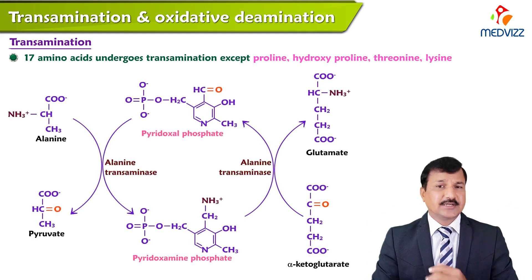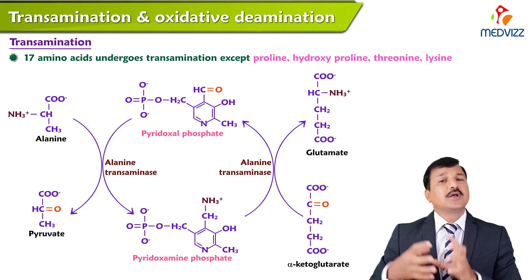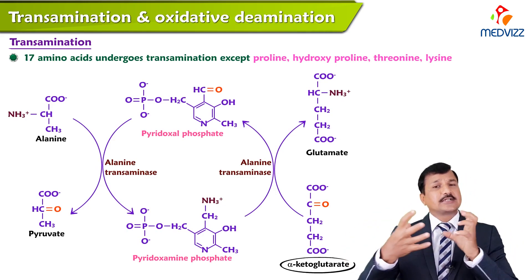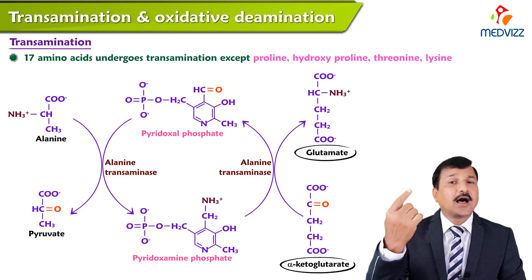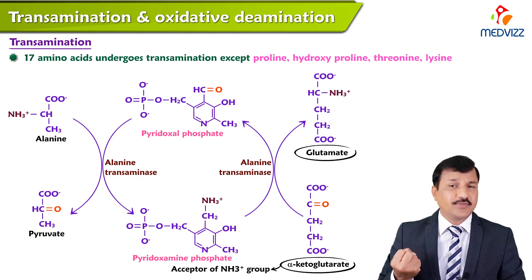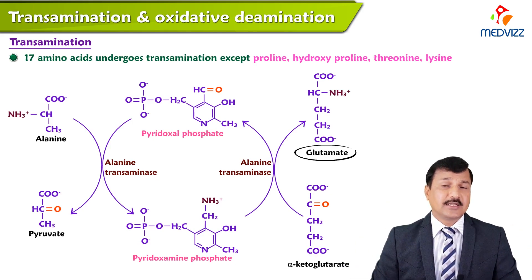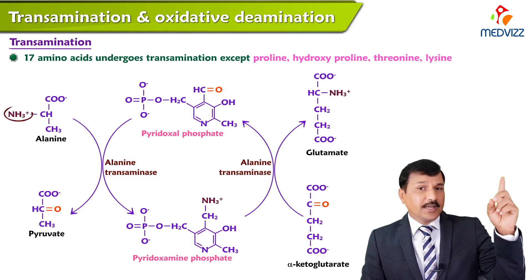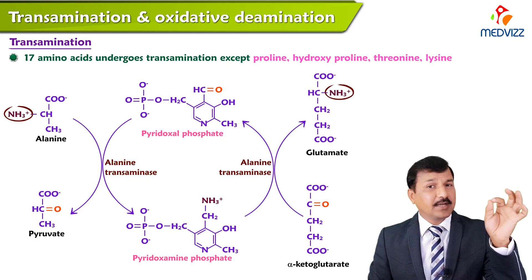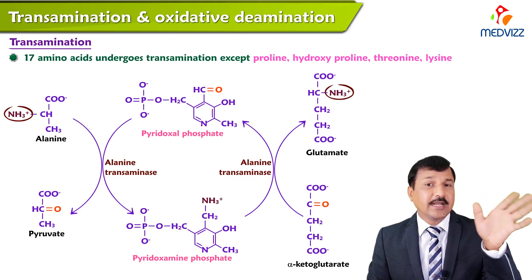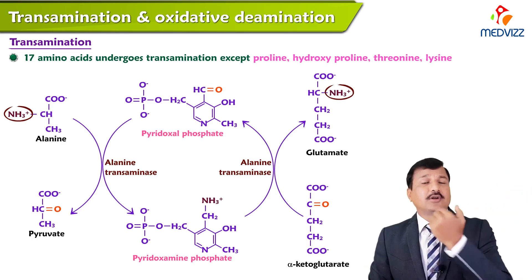In transamination in peripheral tissues, the amino group is transferred to alpha-ketoglutarate and alpha-ketoglutarate becomes glutamate. In every transamination reaction, alpha-ketoglutarate is the acceptor of the amino group and becomes glutamate. So the primary amino group of an amino acid is ultimately found in glutamate. If you radiolabel the primary amino group nitrogen, you will find that nitrogen in glutamate.